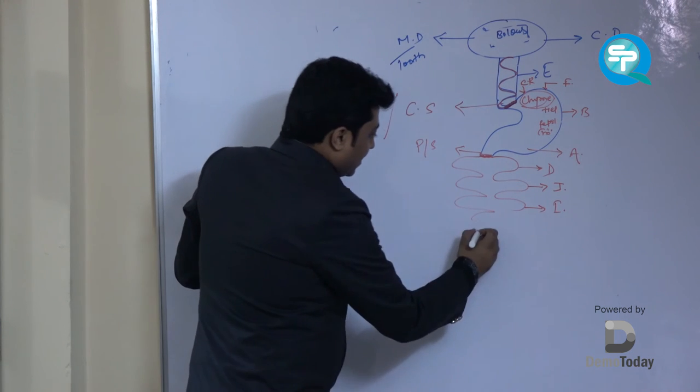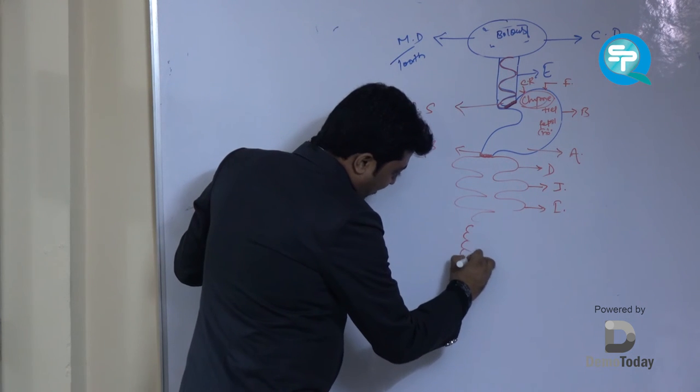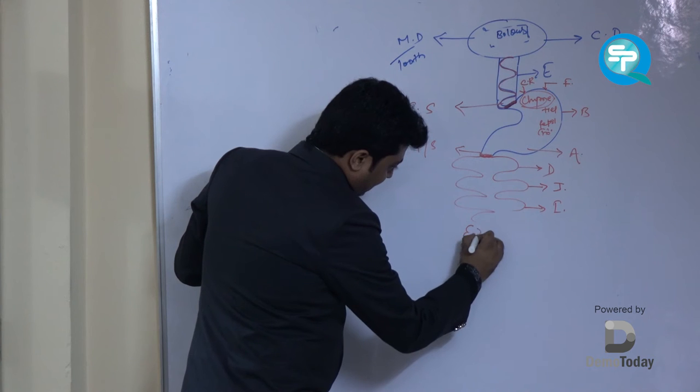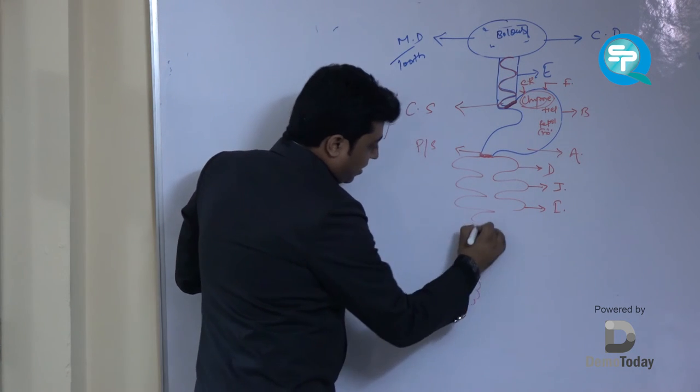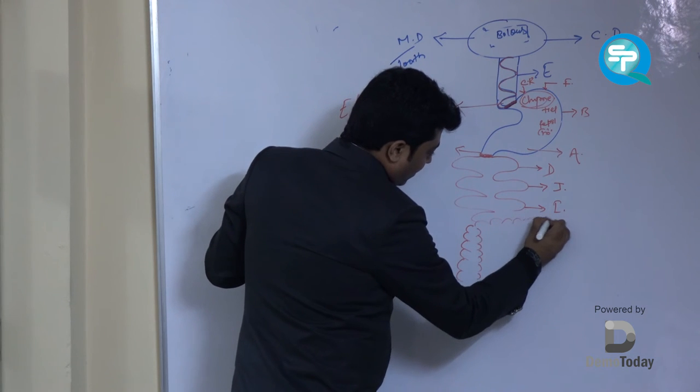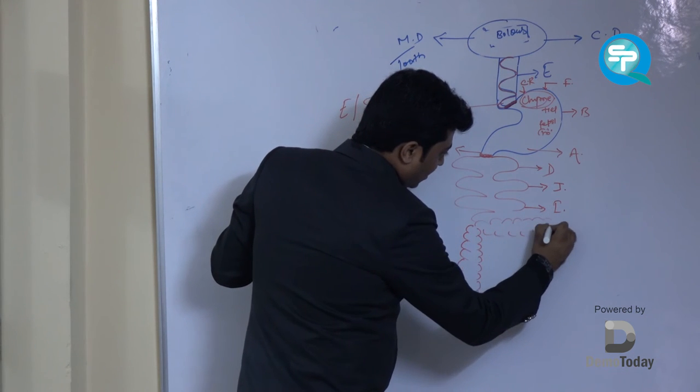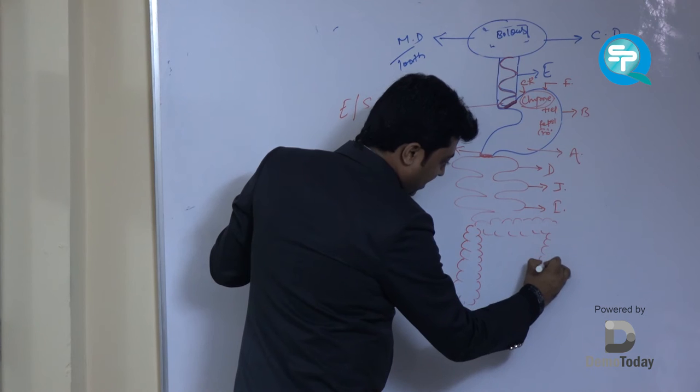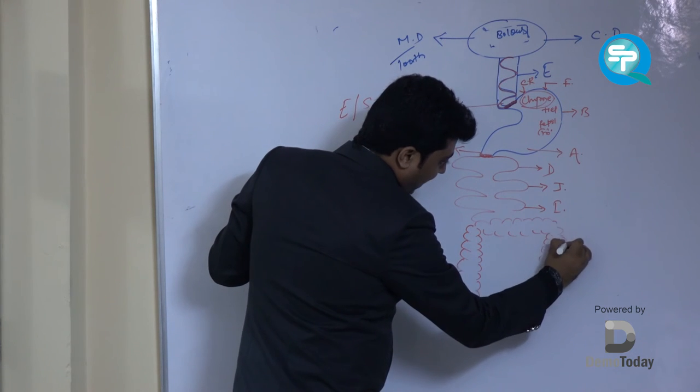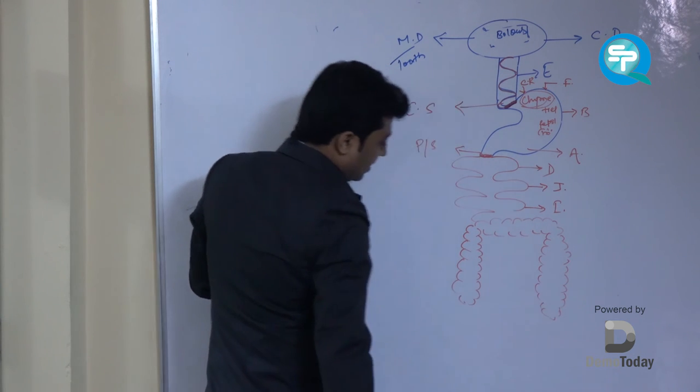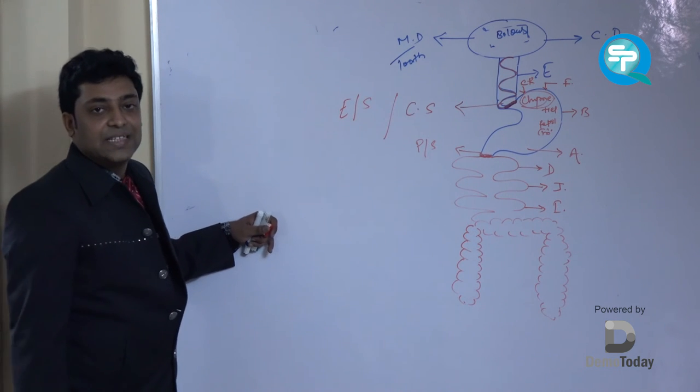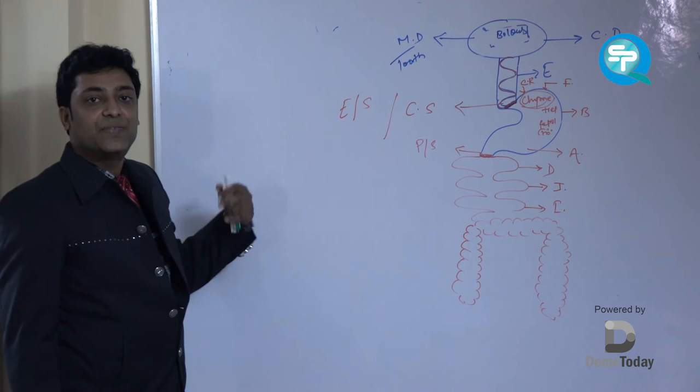Here the ileum joins with the large intestine, also known as colon. Now we have another sphincter in between the colon and small intestine. That is known as ileocecal sphincter.